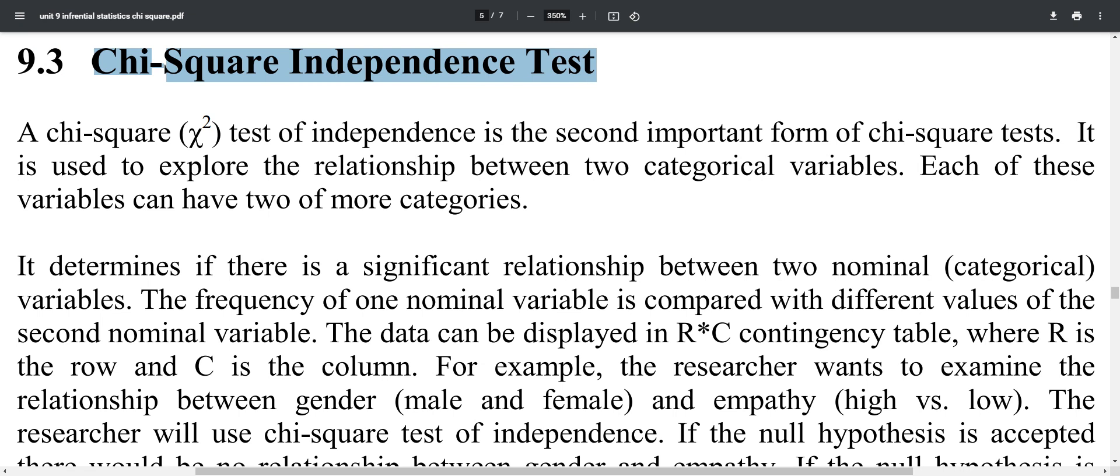I study Chi-Square Test of Independence is the second important form of Chi-Square Test. It is used to explore the relationship between two categorical variables. Each of these variables can have two or more categories.